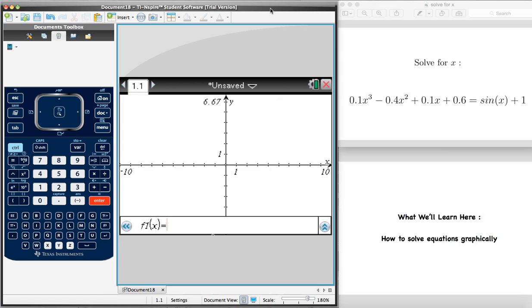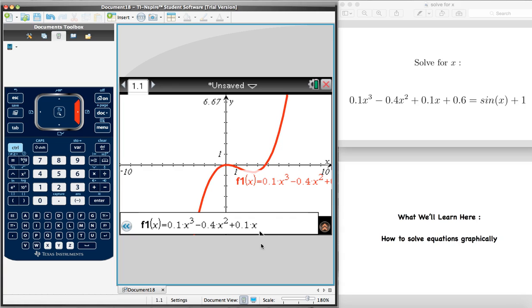It's now asking us to enter the first function of x, so that's f1(x). And just as we said, what we'll be entering here is going to be the left hand side of our equation. So that would be 0.1x³ - 0.4x² + 0.1x + 0.6. Done.